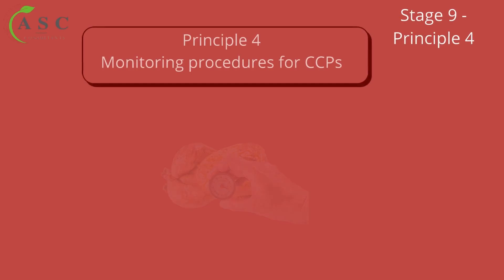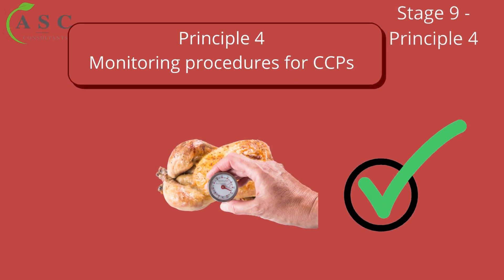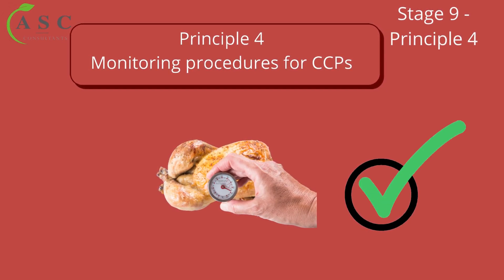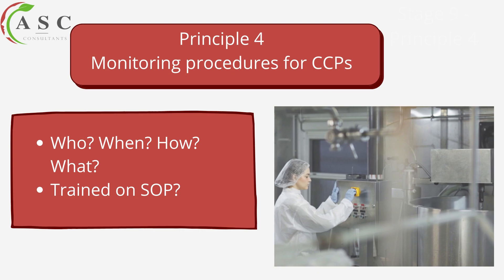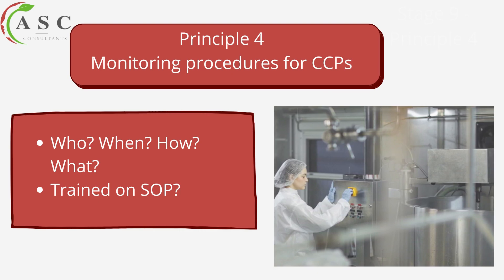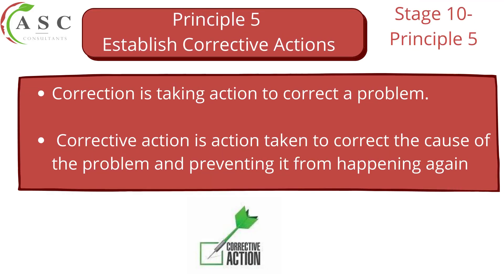Let's now move to principle four — monitoring procedures for CCPs, which is stage nine. Here we look at how we monitor the CCP, who monitors it, when they monitor it (the frequency), how they monitor it (the equipment used), and what exactly they are supposed to monitor. It is important that the CCP operator responsible is adequately trained and familiar with the process they are supposed to observe.